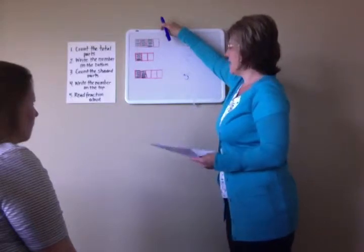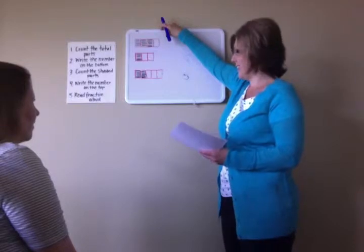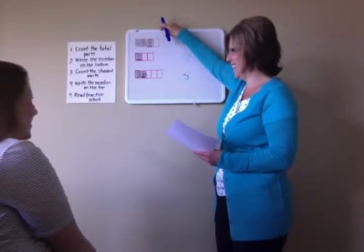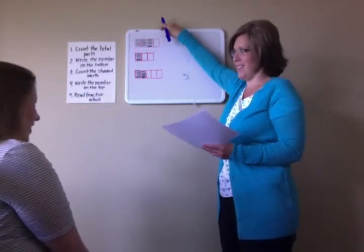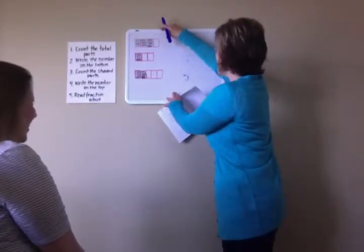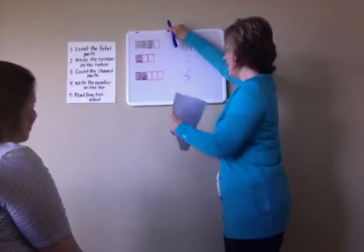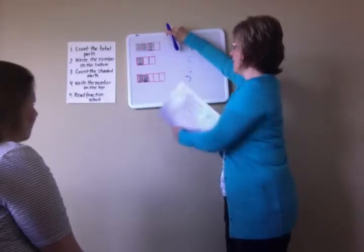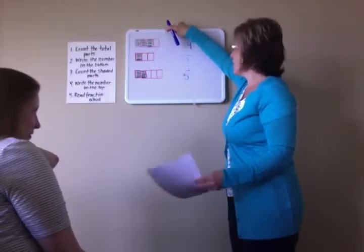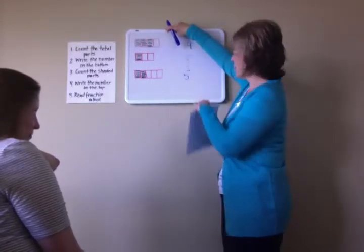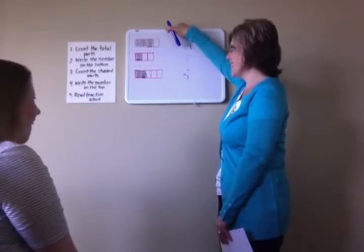And then we need to go to the next step. What's the next step? Sadie? Write the number on the top. That's right. Write the number on the top. And so what number will we write on the top, Sadie? Two. Super. You're doing such a great job. So we'll write the number two on top. And now our final step — Sadie? Read the fraction aloud. So Sadie, can you read this fraction aloud for us, please? Two-fifths. Awesome. That's super. Two-fifths. That's right.